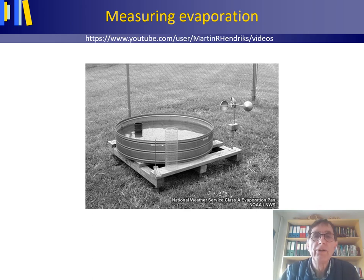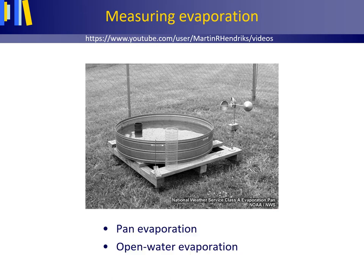This short video lecture is on measuring evaporation. A low budget and direct way to obtain some measure of the evaporation rate on days with no precipitation is to use a pan filled with water and to measure the height of the water in the pan for two consecutive days at exactly the same time. The difference in height in millimeters divided by the time interval in days yields the pan evaporation in millimeters per day.